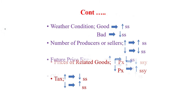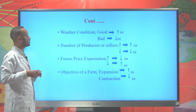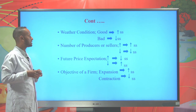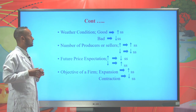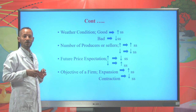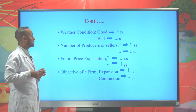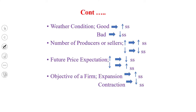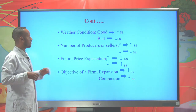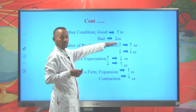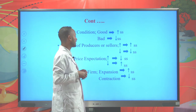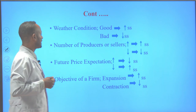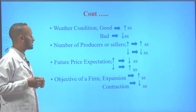Weather is another determinant. If there is good weather condition, then the supply of a commodity will increase and the supply curve shifts to the right. If there is bad weather condition, then the supply of a commodity will decline and it shifts the supply curve to the left. The number of producers or sellers is also a determinant. If there is a large number of producers in the market, supply will increase, and with a decline in the number of producers, supply will decline and the curve shifts to the left.